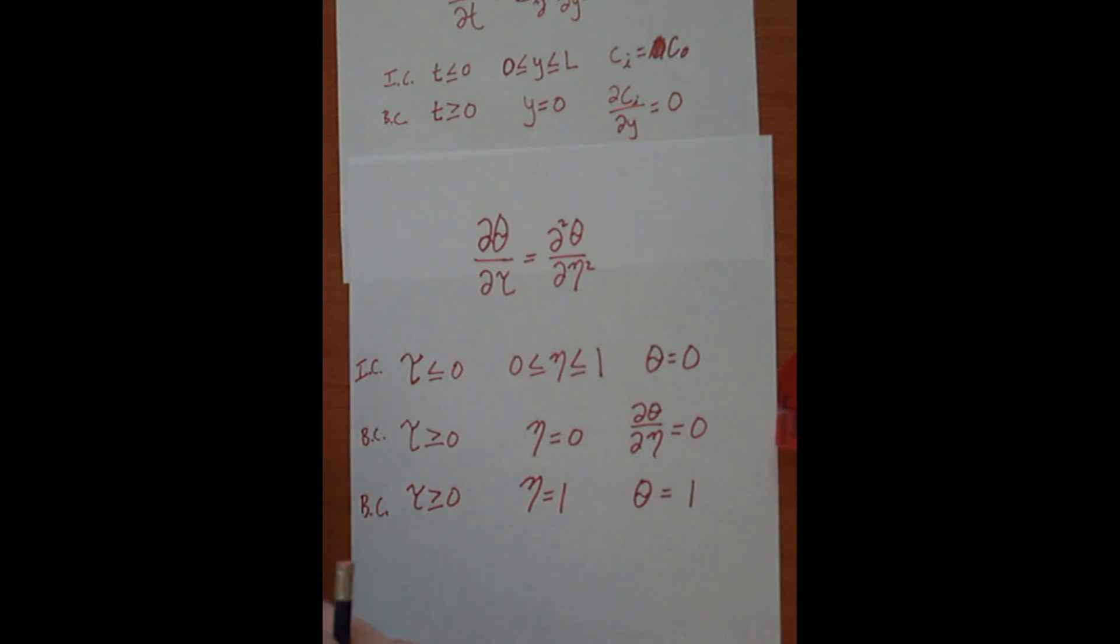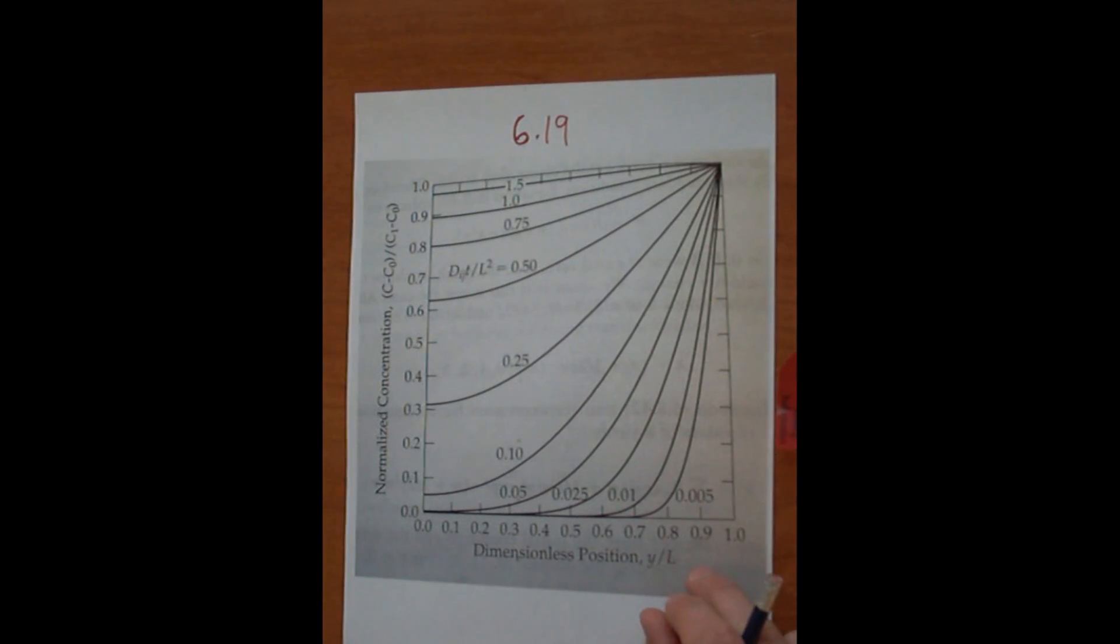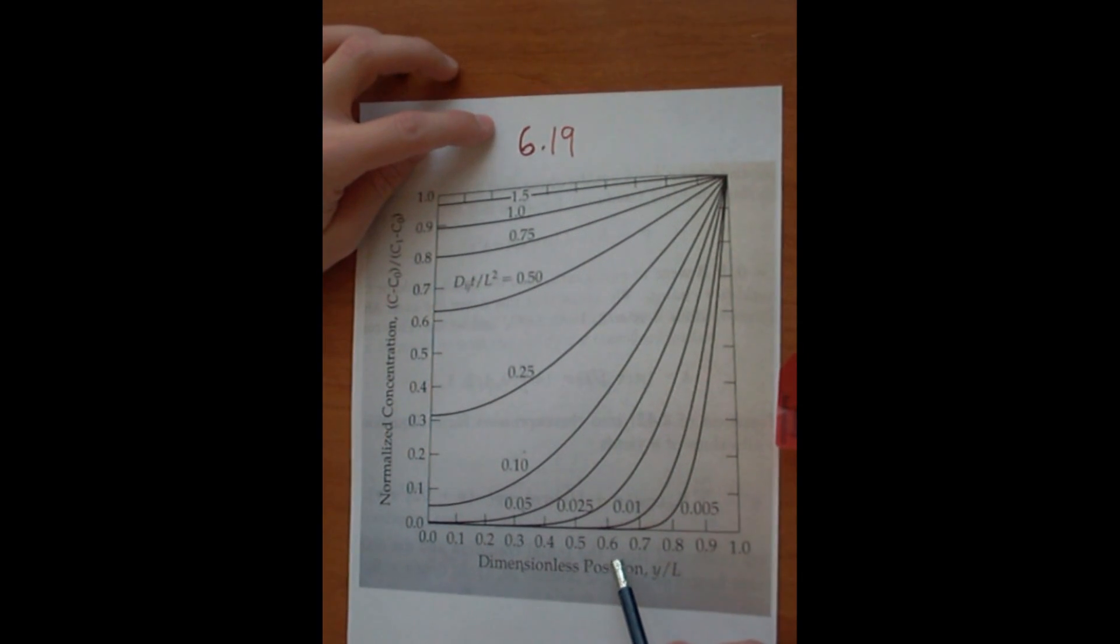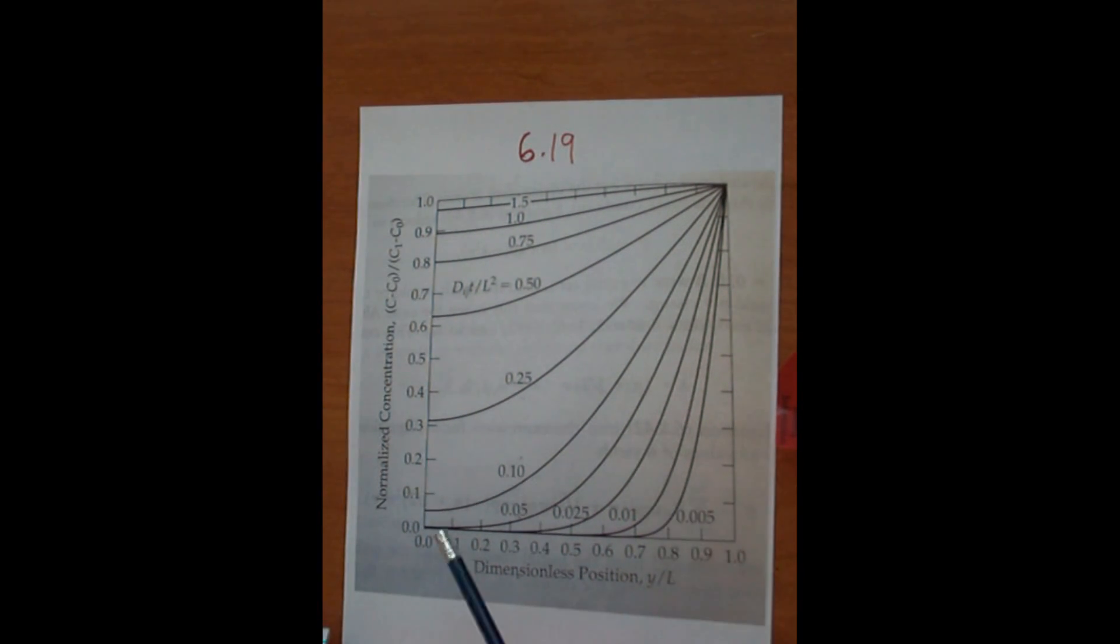And what's really nice is in the book, they figure 6.19, they show a graph of dimensionless position and normalized concentration. And again, that's Y over L, and there's your theta.